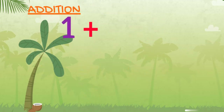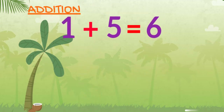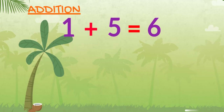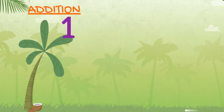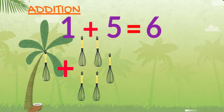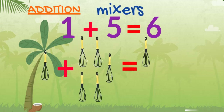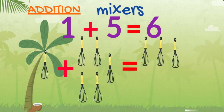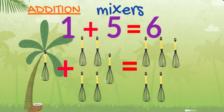1 plus 5 equals 6. 1 mixer plus 5 mixers equals 6 mixers.